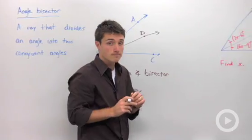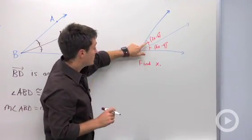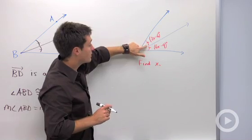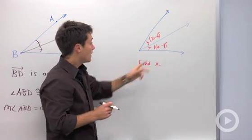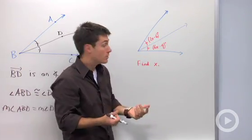So in this example right here, we have a ray that is an angle bisector, which I can tell because it is being divided into two congruent angles. And I can find X because I know these angles must equal each other. So what are you going to do?